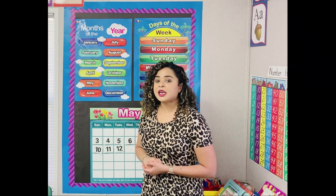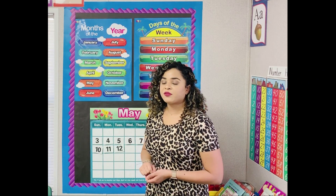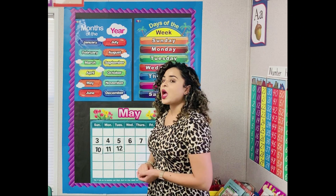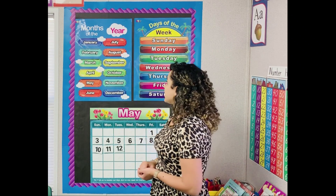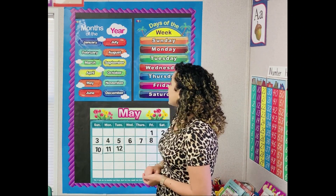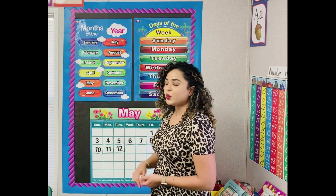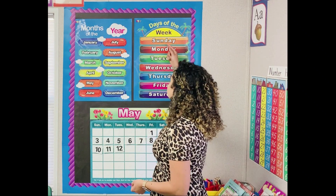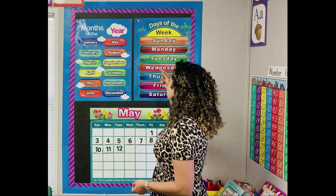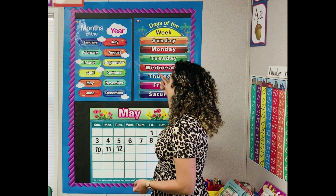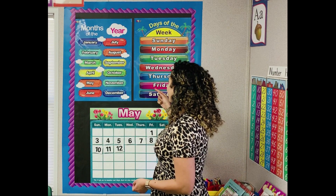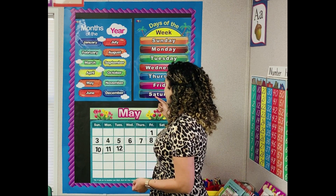How many days do we have in one week? Seven. There are seven days in a week. Sunday, Monday, Tuesday, Wednesday, Thursday, Friday, Saturday.